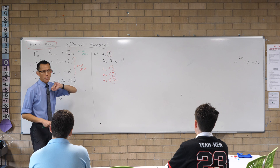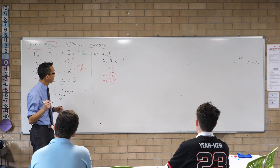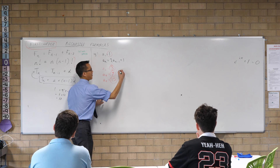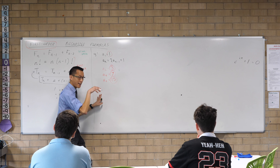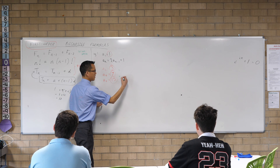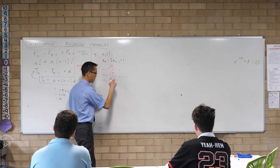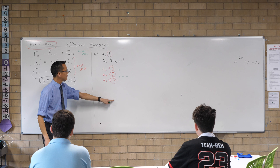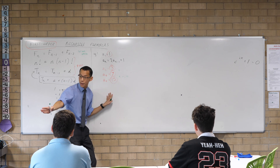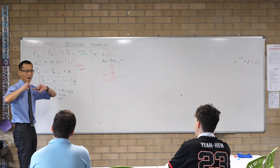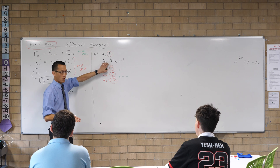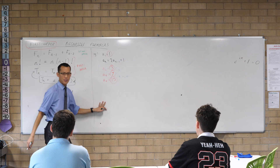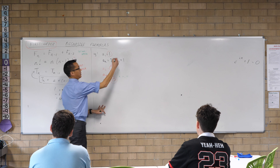It goes from 1 to 3, which is the next odd, then to 7 — skipping 5 — and then to 15, skipping 9, 11, and 13. And by the way, if we went again you'd skip over five of them.